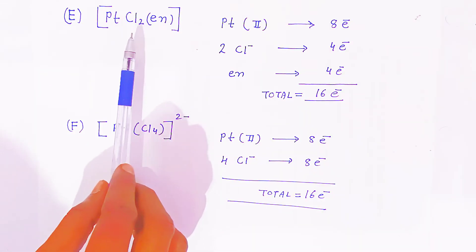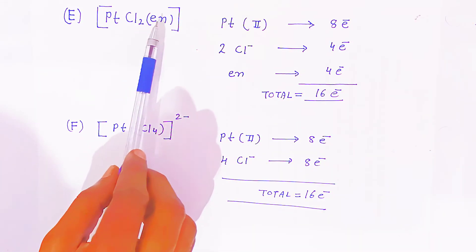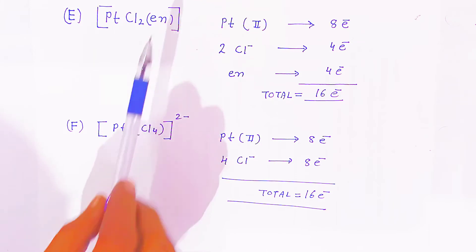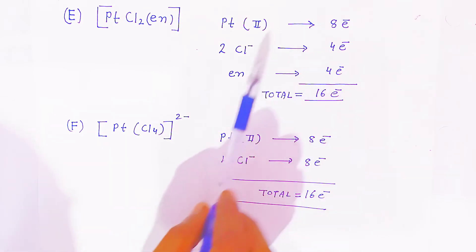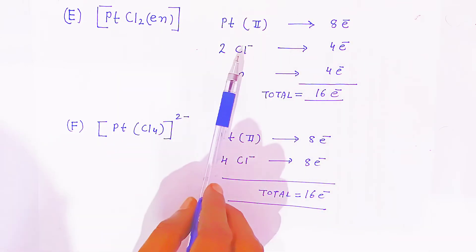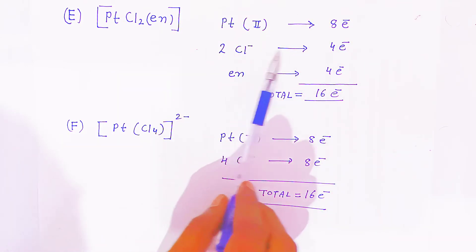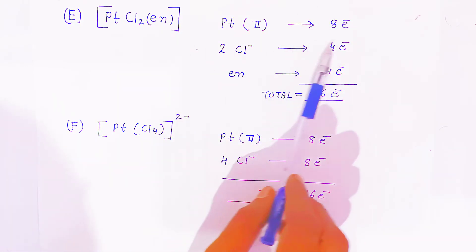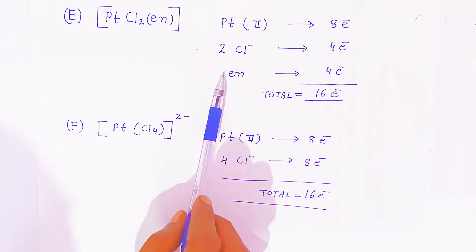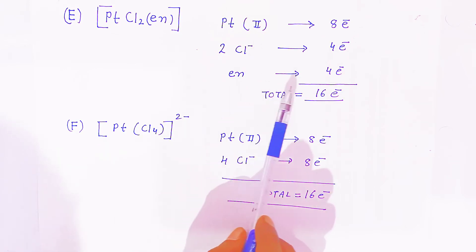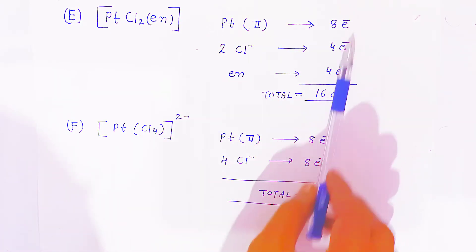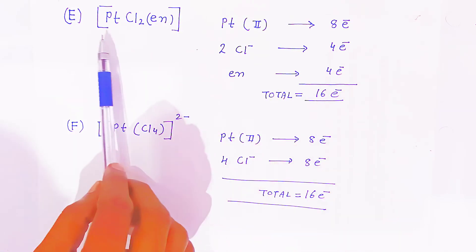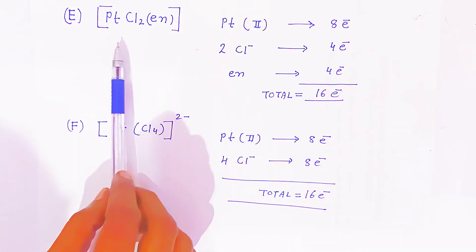For the fifth example, we have a platinum complex with 2 chloride ligands and 1 ethylenediamine. Platinum(2+) has 8 electrons in its outermost orbit. Two chloride ions donate 4 electrons, and ethylenediamine, having 2 donor groups, donates 4 electrons. Adding: 8 + 4 + 4 = 16 electrons, making this complex very stable.